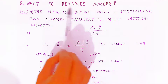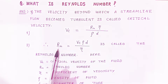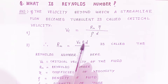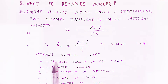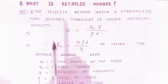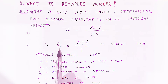Critical velocity is written as Vc, and velocity as v. So critical velocity is nothing but Rn × η / (ρ × d). Where Rn is the Reynolds number, so cross-multiplying: Reynolds number Rn = (Vc × ρ × d) / η. Here Vc is the critical velocity, η is coefficient of viscosity, ρ is the density of fluid, and d is the diameter of the tube.